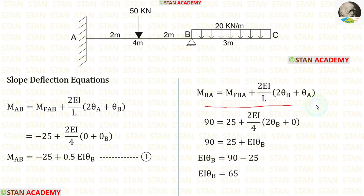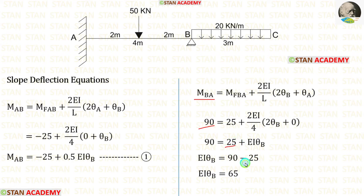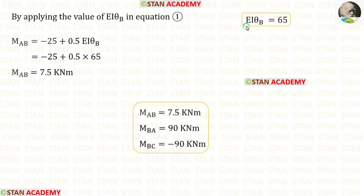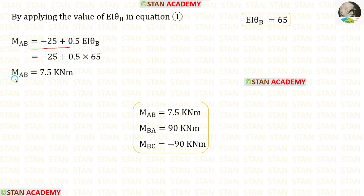Here we can apply the equilibrium equation. We know the value of MBA, which is 90. Applying that and taking 25 to the left side, it becomes negative. Finally, we get EI·theta B, which is equal to 65. Applying the value of EI·theta B into equation 1, we get MAB, which is equal to 7.5 kNm.